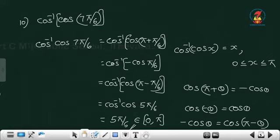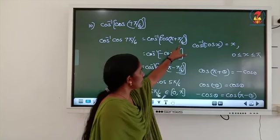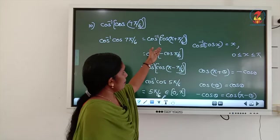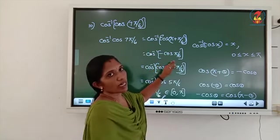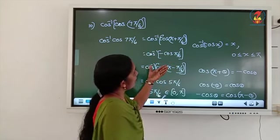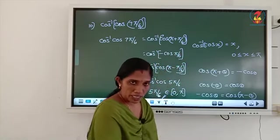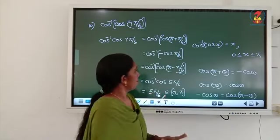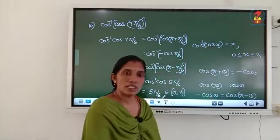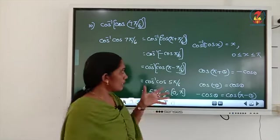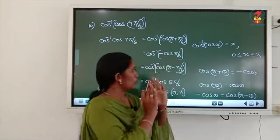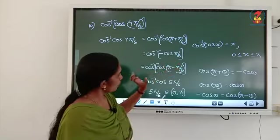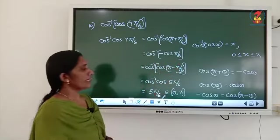So we got the answer. First we split 7 pi by 6 as pi plus pi by 6, cos of pi plus theta gives minus cos theta. Then we express minus cos theta as cos of pi minus theta — that is only possible for cos inverse, cot inverse, and sec inverse, whose range is the first and second quadrant. So we express a second quadrant value to get the answer.